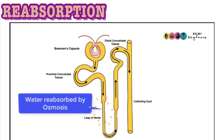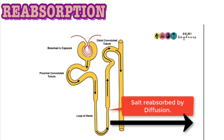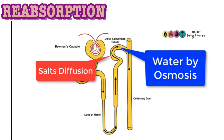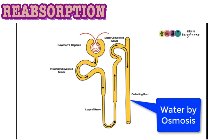As the filtrate enters the ascending limb of the loop of Henle, only salt is reabsorbed, and it is through diffusion. As the glomerular filtrate passes up in the loop of Henle, salt is reabsorbed, but this time it is through active transport. The filtrate now enters the distal convoluted tubule, where water is reabsorbed through osmosis, and salt is reabsorbed through diffusion if needed. And if it enters the collecting duct, water can be absorbed as well through osmosis if needed.